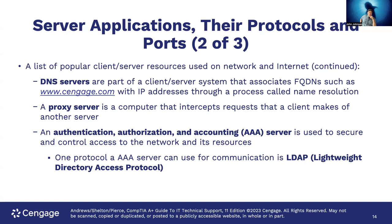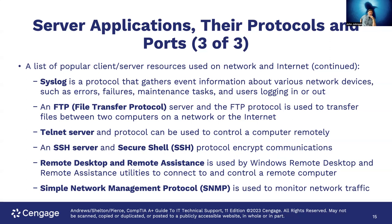A proxy server intercepts requests the client makes of another server. Often a firewall will do proxying — you send a request to the internet, the proxy server makes that request for you, brings back the results, and often caches them so if someone else requests the same site, it just hands over the cached copy. An authentication, authorization, and accounting (AAA) server is used to secure and control access to the network and its resources. One protocol an AAA server can use is LDAP — the Lightweight Directory Access Protocol. Syslog is a protocol that gathers event information about network devices such as errors, failures, and user logins.